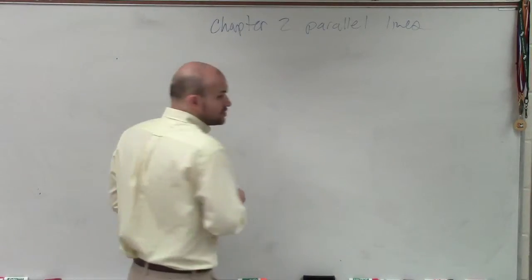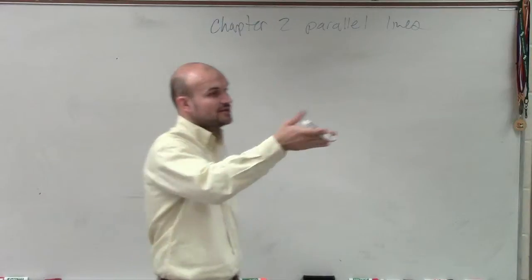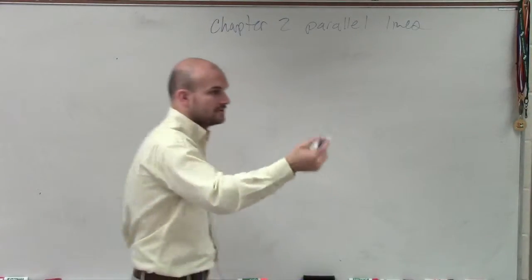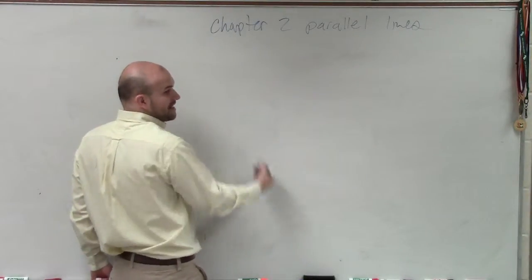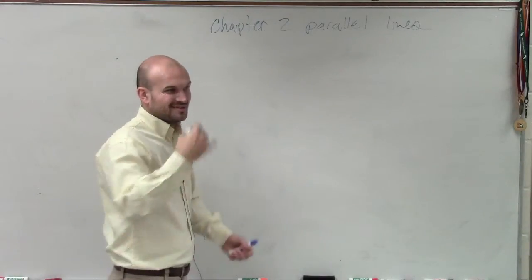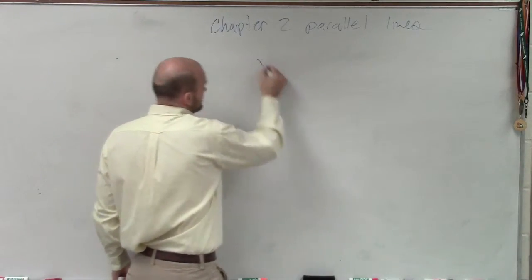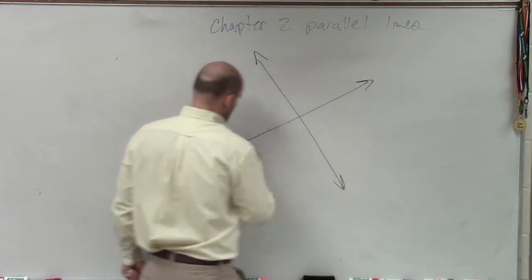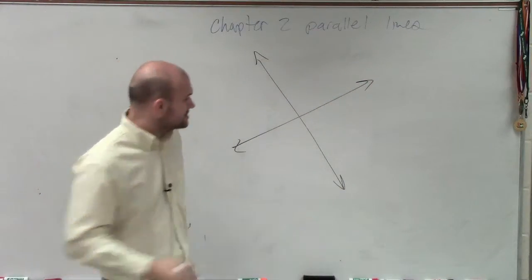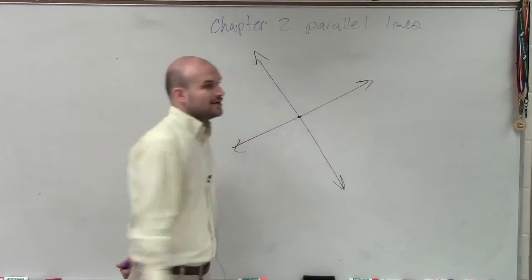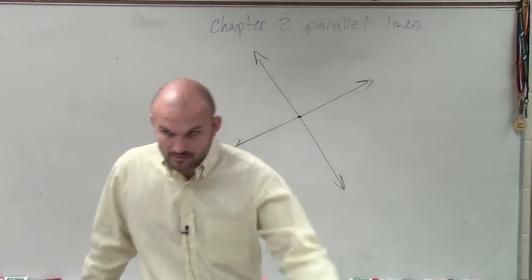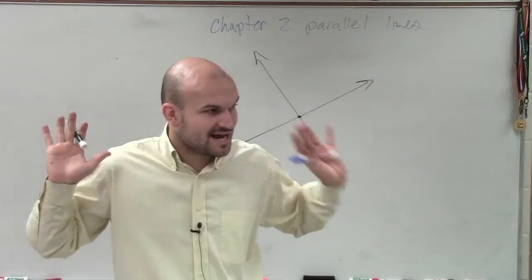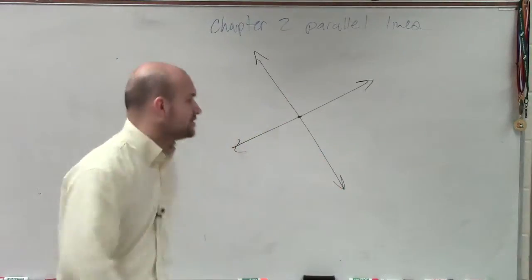So I'll ask you that. Vertical angles are created by what? How do we create vertical angles? Intersecting two lines. So we intersect two lines. We know that the two vertical angles have to share a common vertex. And they share how many sides? None, right? Good.